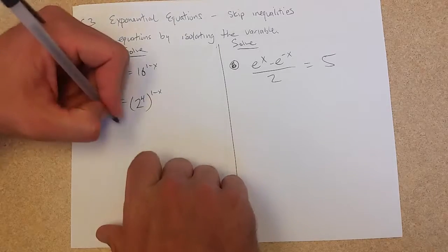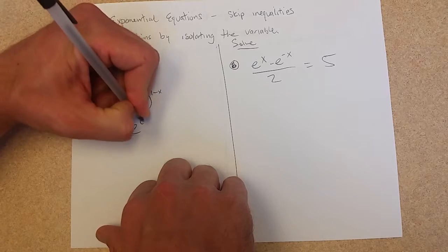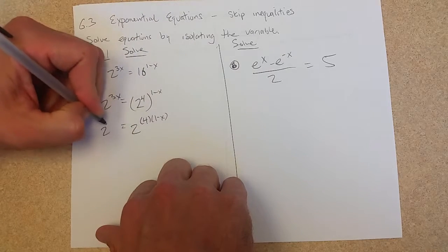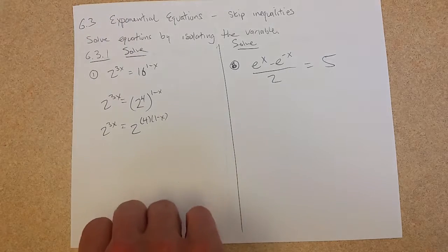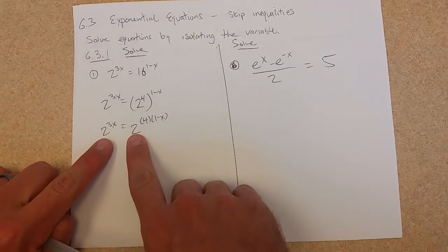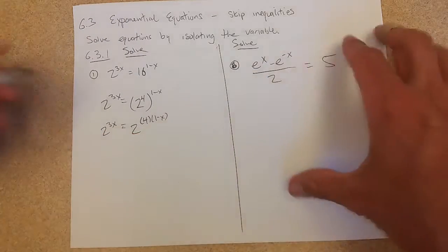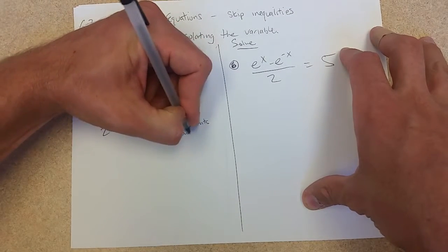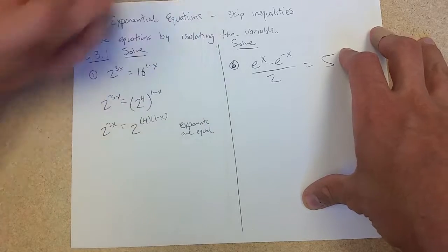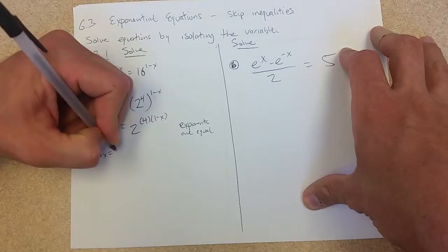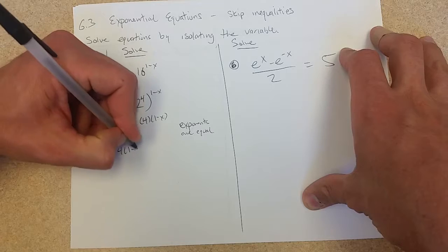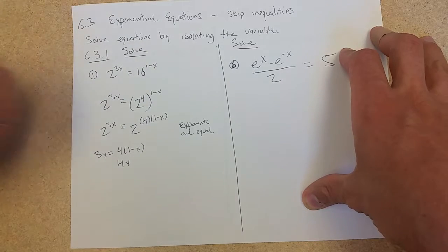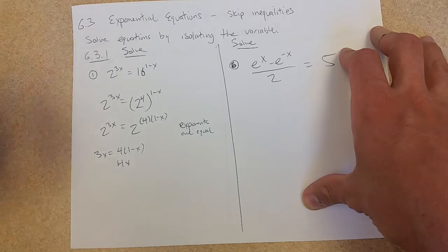So now I have a power of a power. I can write this as 2 to the 4 times 1 minus x equals 2 to the 3x. Bases are good and they match, so the powers have to be equal. So exponents are equal. We have 3x equals 4 times 1 minus x. Distribute the 4.